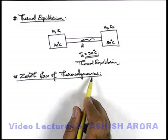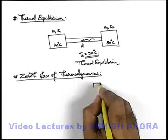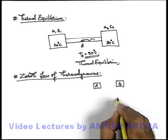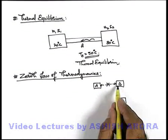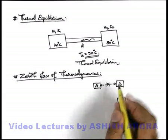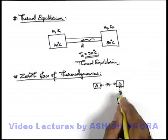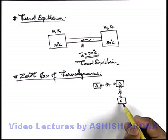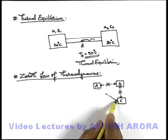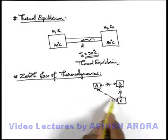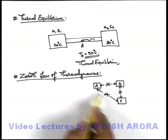The Zeroth Law of Thermodynamics analyzes thermal equilibrium between different bodies. Take three bodies A, B, and C. If A and B are connected and no flow of heat takes place, then A and B are in thermal equilibrium. If B is independently connected to C and no heat flow takes place between B and C, then B is in thermal equilibrium with C. So if body B is independently in thermal equilibrium with two other bodies, then those two bodies will also be in thermal equilibrium when connected.